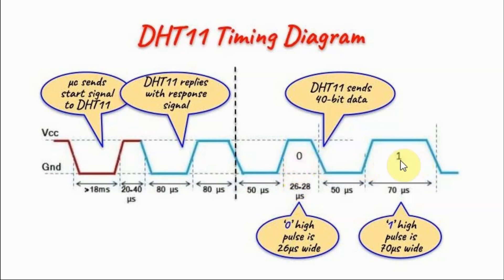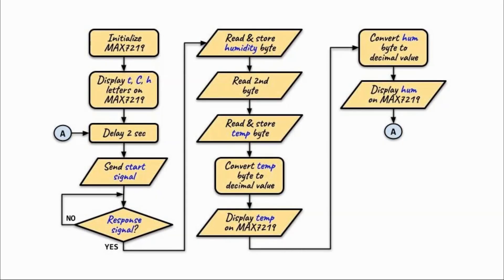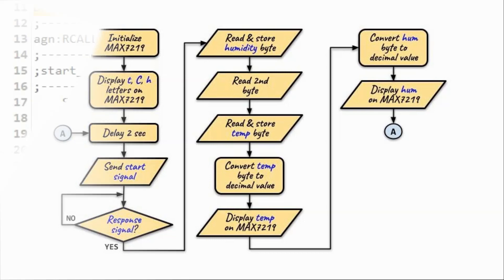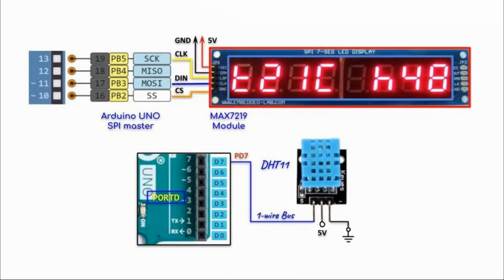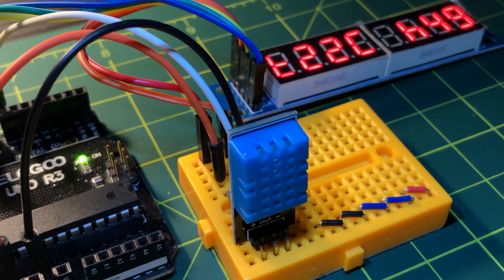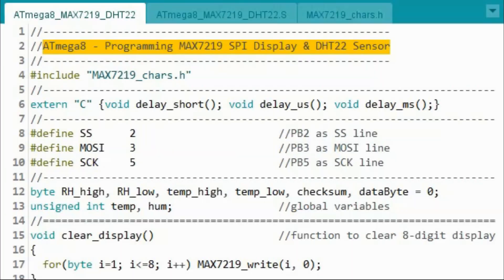Programming the DHT22 sensor is similar to programming the DHT11 sensor. You can watch the tutorial where DHT11 is programmed using assembly code — a link is available in the video description. The DHT22 sensor and MAX7219 display were programmed from scratch with no libraries used.